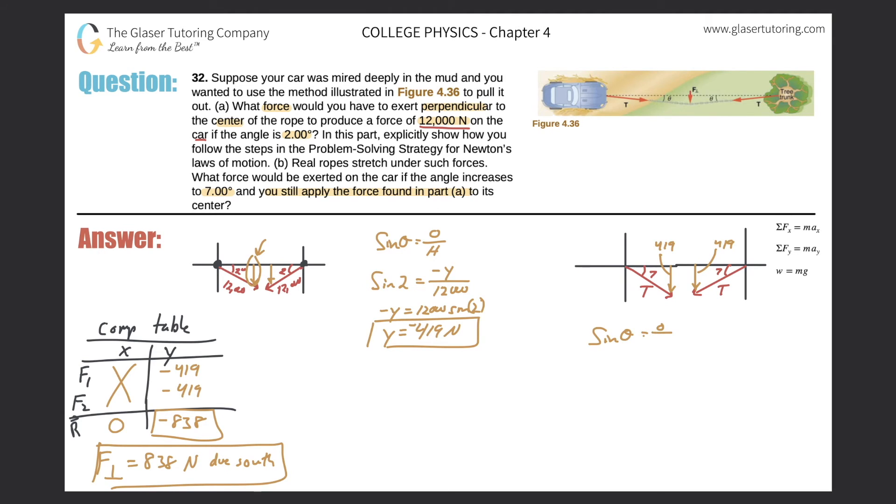So I'm looking for the hypotenuse. I know the side opposite of the angle, so let's use sine. Sine of theta equals opposite over hypotenuse. Sine of 7 degrees will now equal negative 419 over my hypotenuse value. So now hypotenuse will be, and we really don't even need the negative sign necessarily, because the hypotenuse won't be necessarily negative. It'll have a certain angle to it, but I'll plug it in anyway. So we get negative 419 divided by sine of 7. And that works out to be a negative 3.44 times 10 to the third newtons.